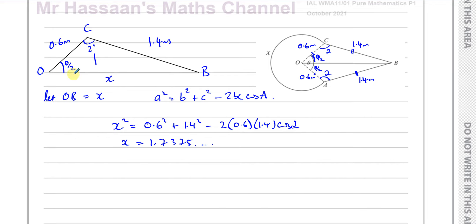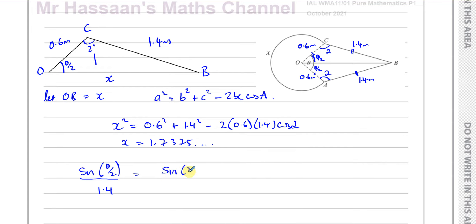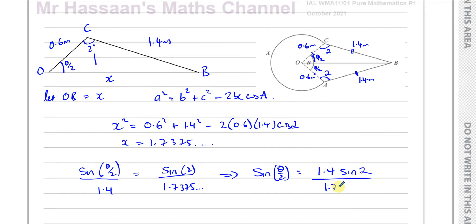Now I use the sine rule to find theta over 2. The sine rule states that the sine of an angle divided by the side opposite it gives the same ratio for all angles in the triangle. So: sin(θ/2) / 1.4 = sin(2) / x, where x is 1.7375. Therefore sin(θ/2) = 1.4 × sin(2) / 1.7375.